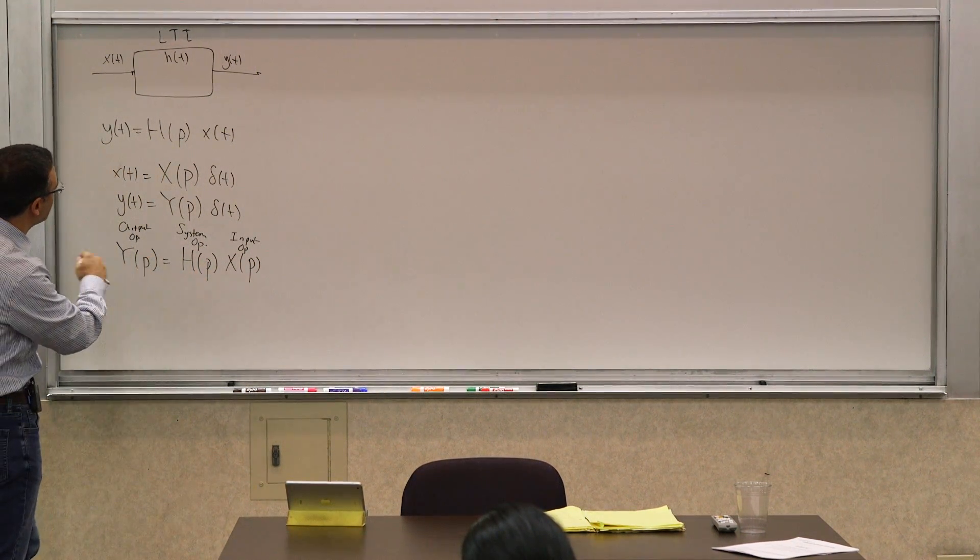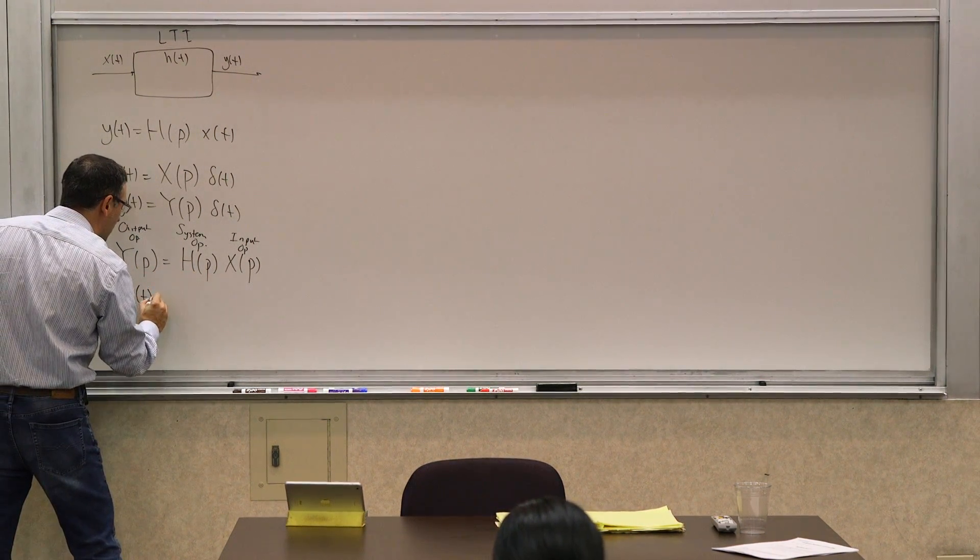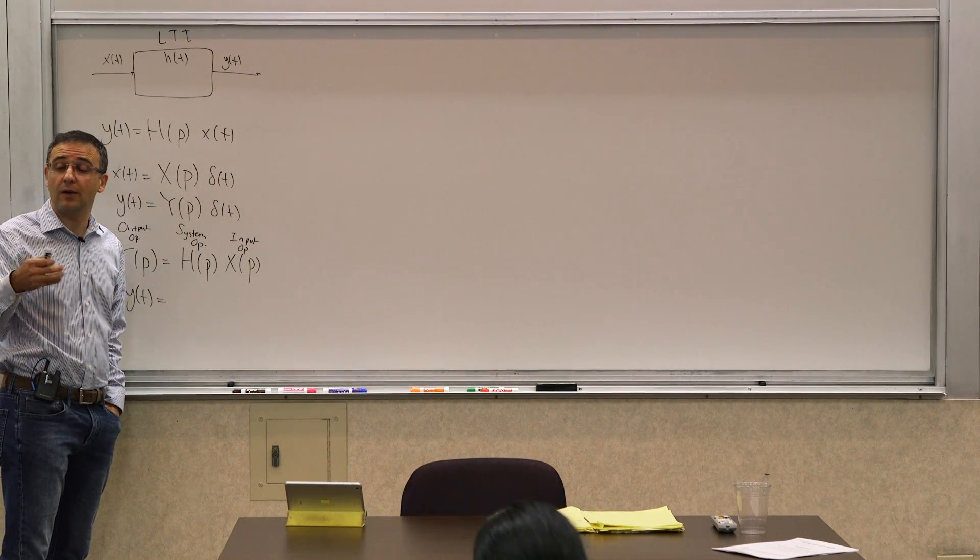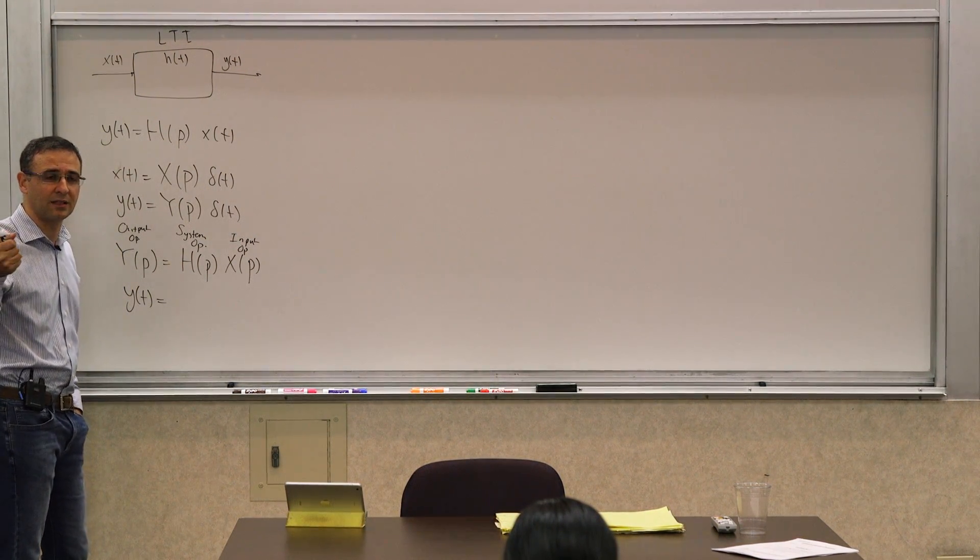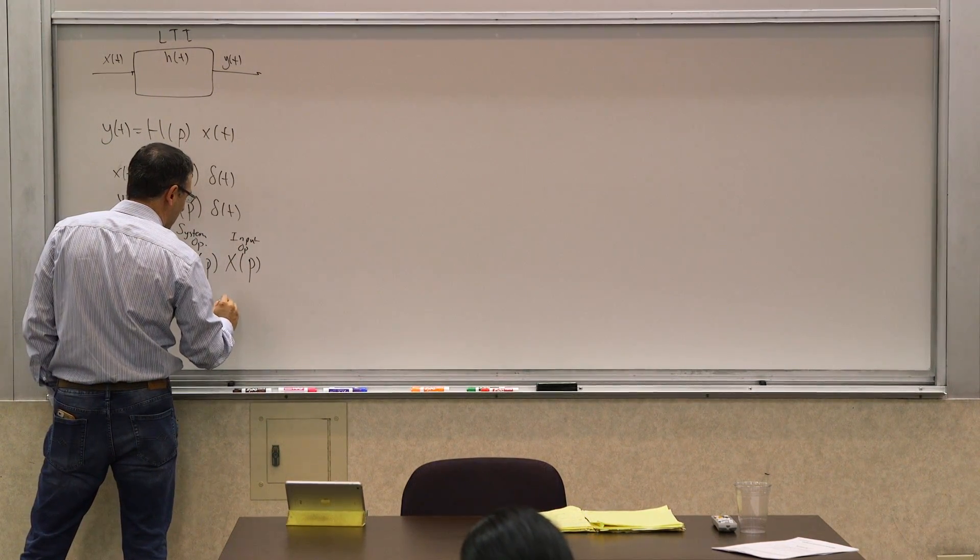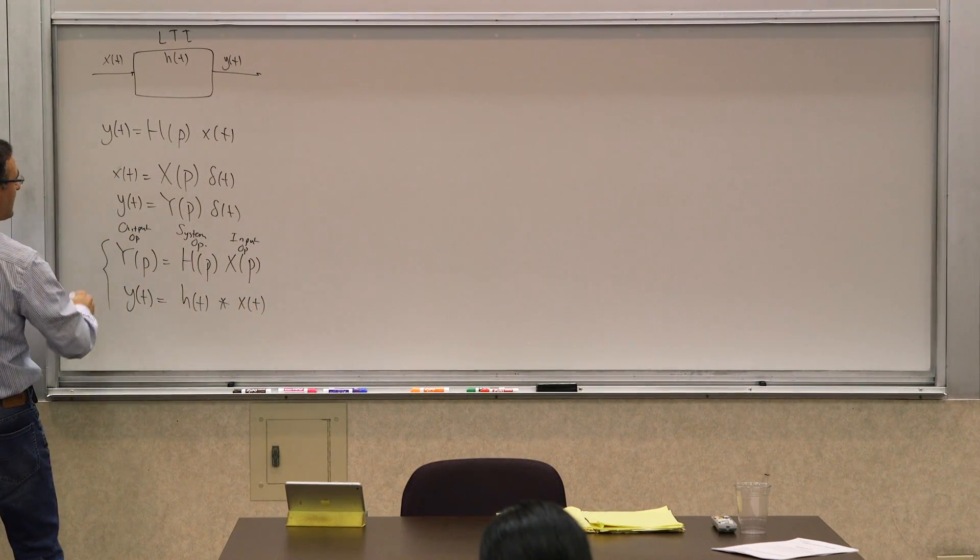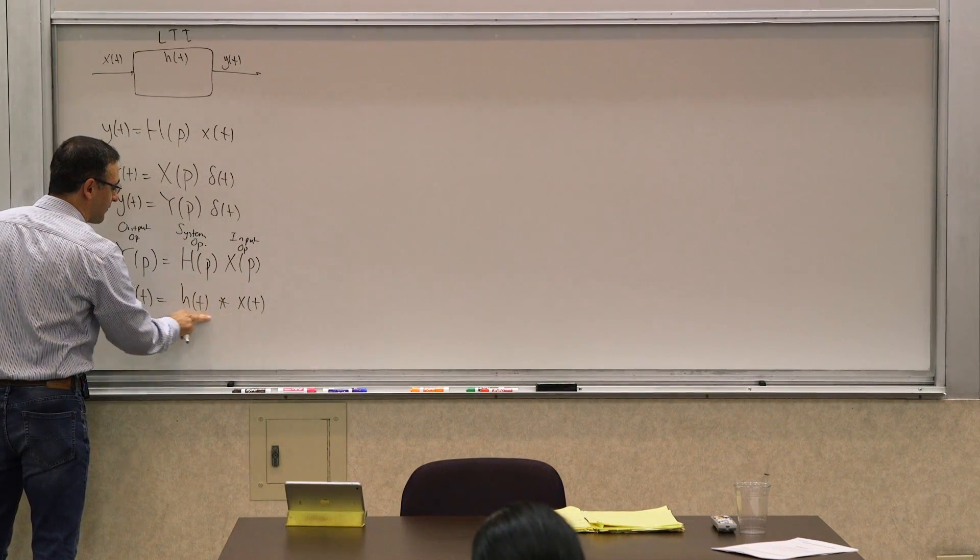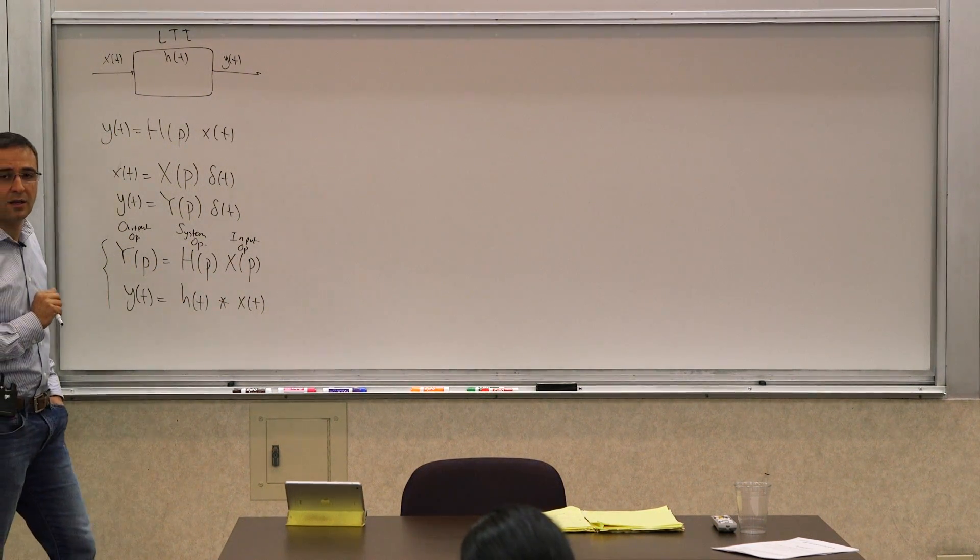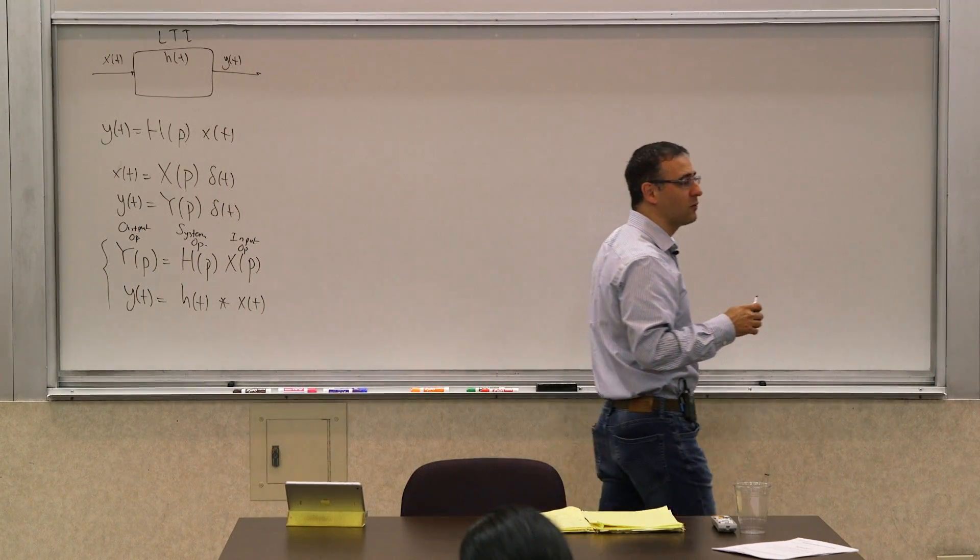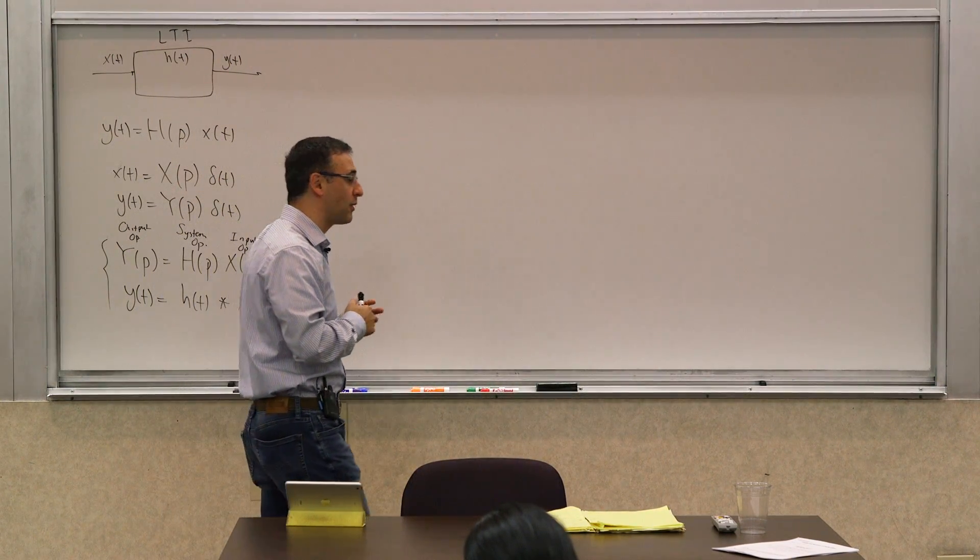Looking at that, we see it does something very interesting because we already knew another relationship. We knew how to calculate y of t. If I gave you an x of t, an input signal, an impulse response for a system, how did we calculate y of t? The convolution, right? So it was h of t convolved with x of t. Convolution was not a very simple operation to perform. Though it's an important one, understanding it is very important.